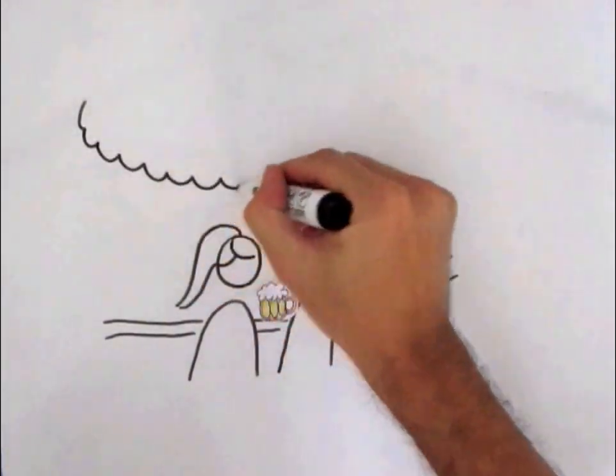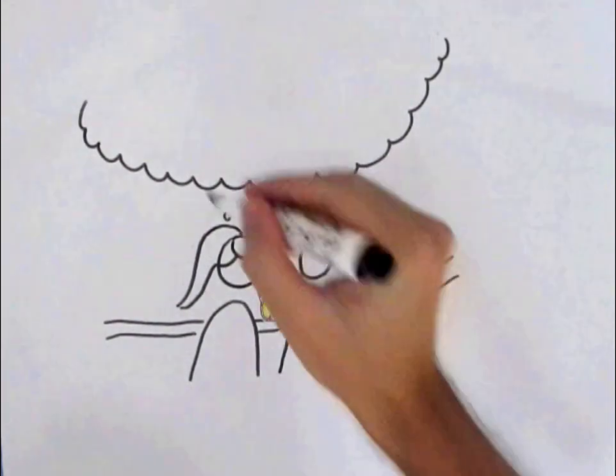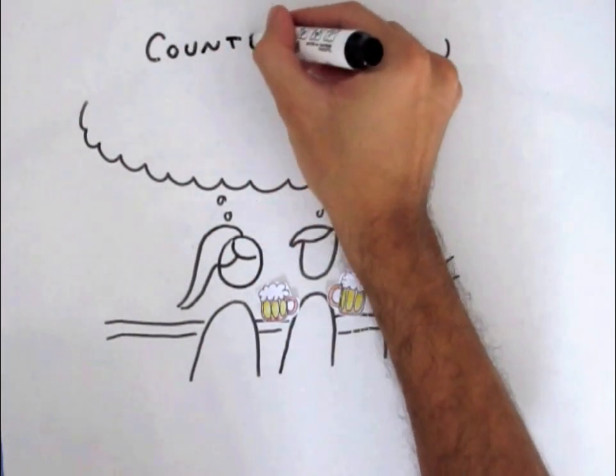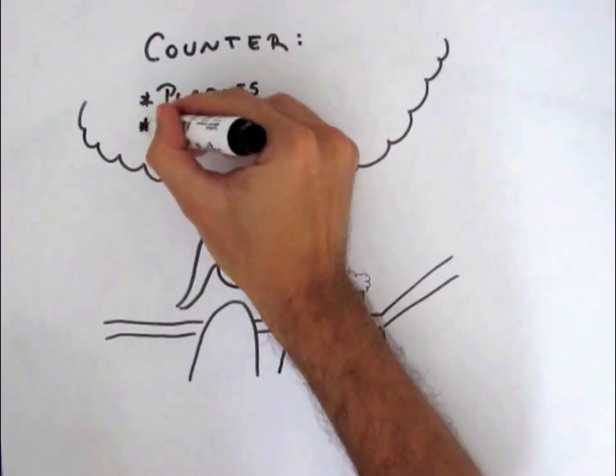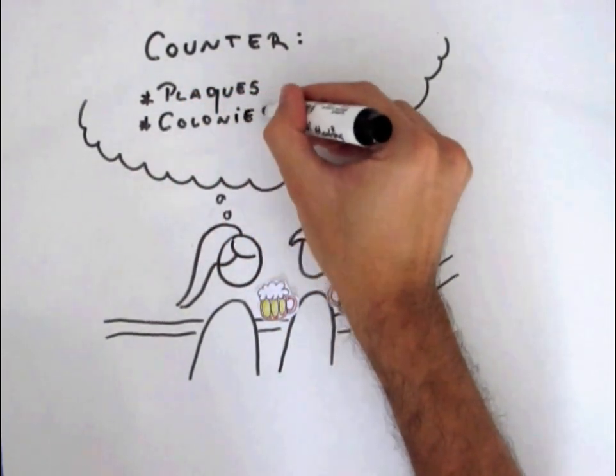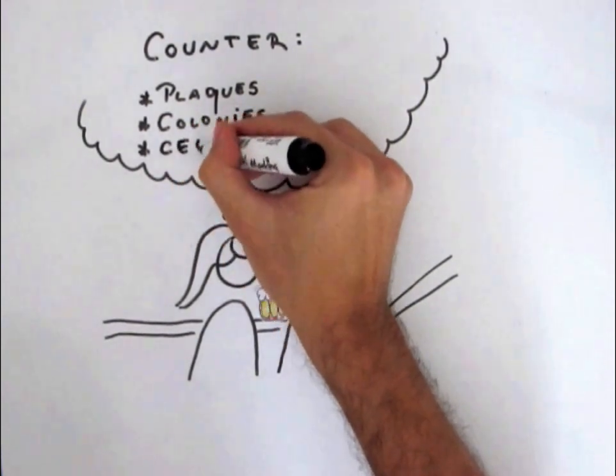We were talking about the questions I had, and he proposed to solve my problems using image processing. Then we thought, why not extend it a little bit to count not just virus, but also bacterial colonies and other cells.